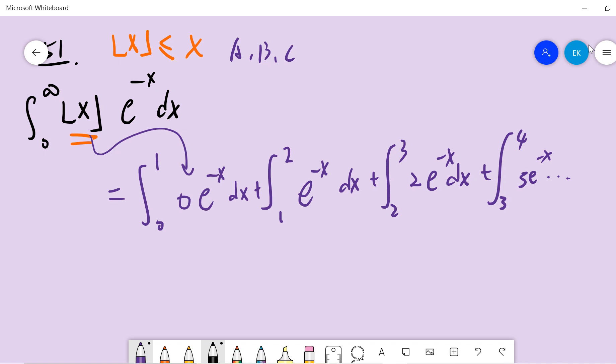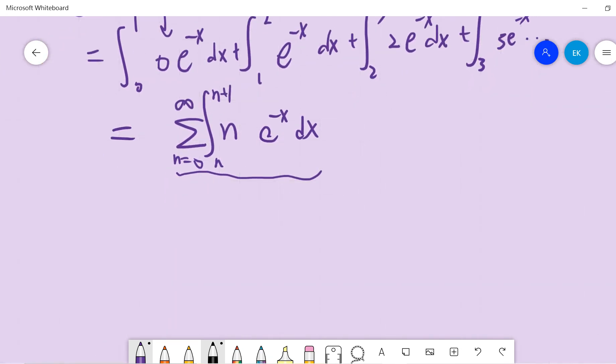This can be written as x^n e^(-x) integrated from n to n+1 summed from 0 to infinity. If we can compute this, then we already solve the problem.